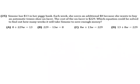Question number 25. Simone has $13 in her piggy bank, so that's our starting. She starts with $13. And then each week she saves, so she adds, an additional $8 because she wants to buy an automatic tennis shoe unlacer. The cost of the unlacer is $229, which equation could be solved to find out how many weeks it will take Simone to save enough money.